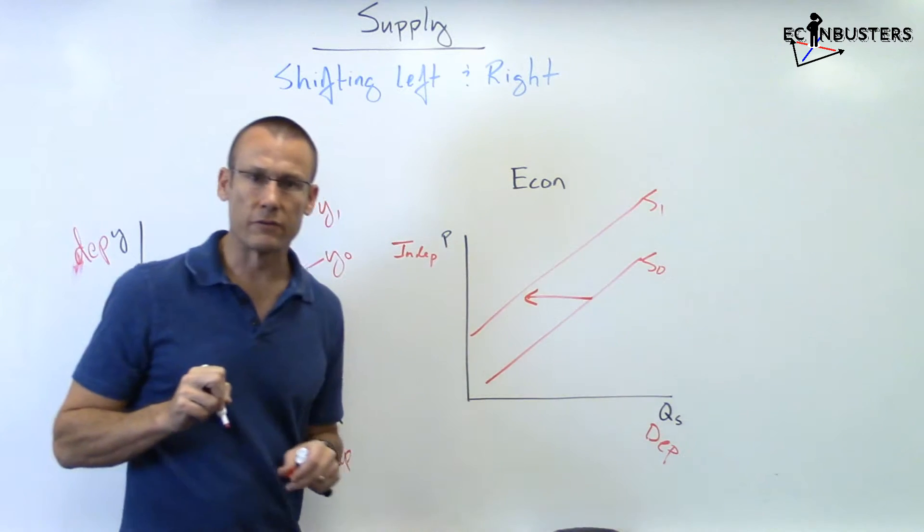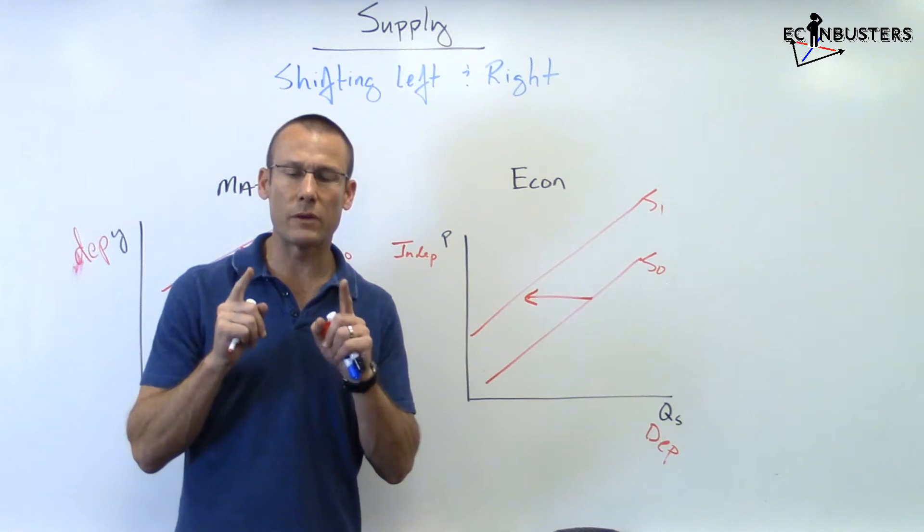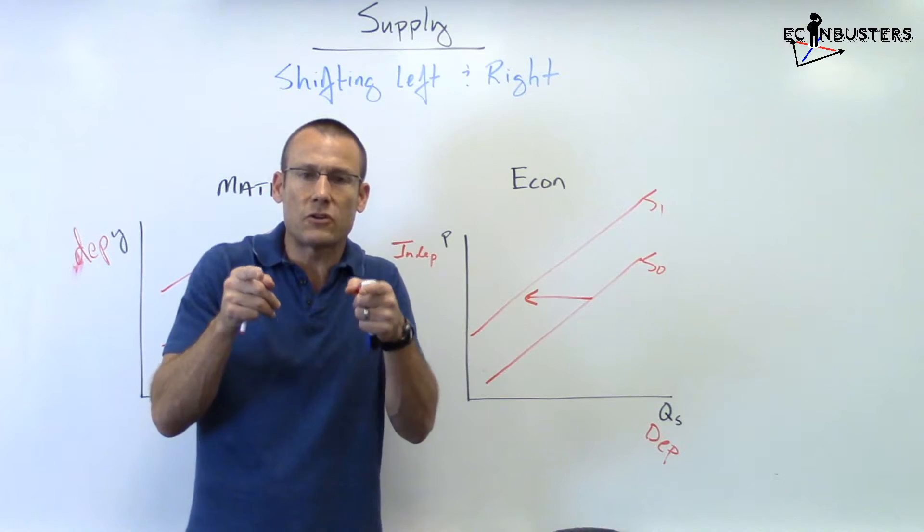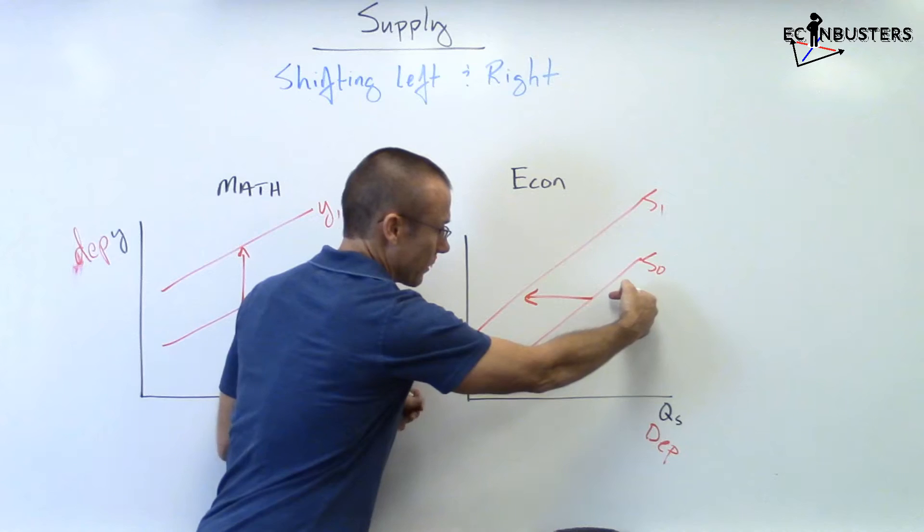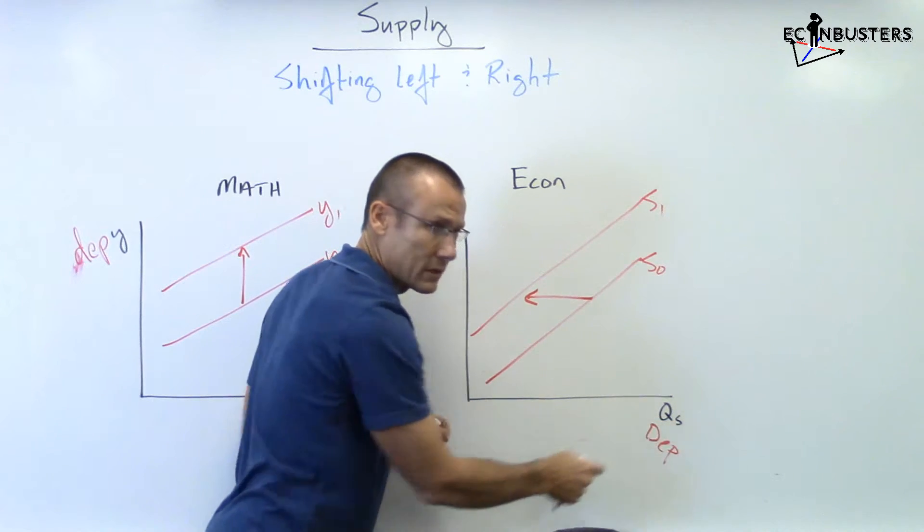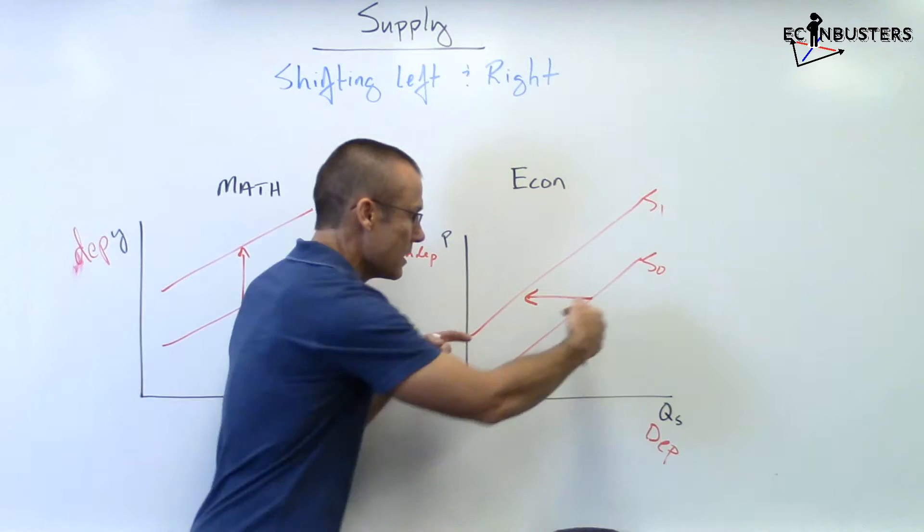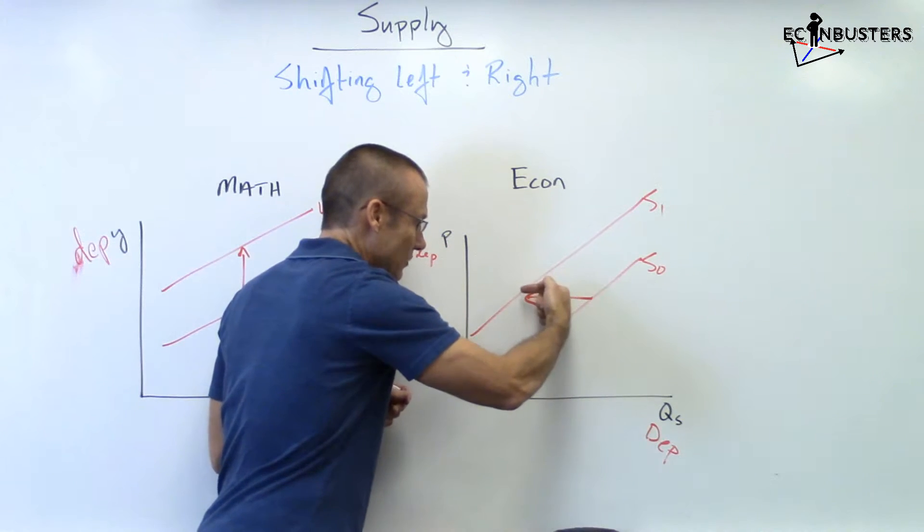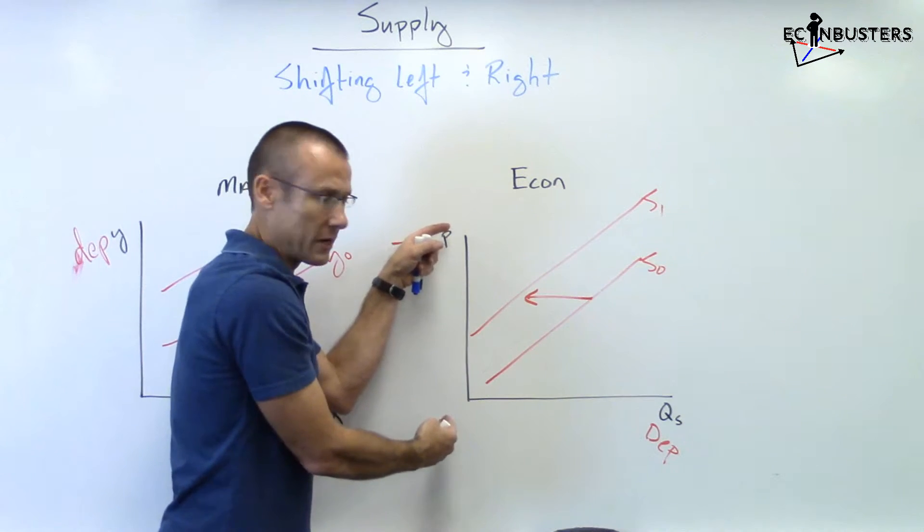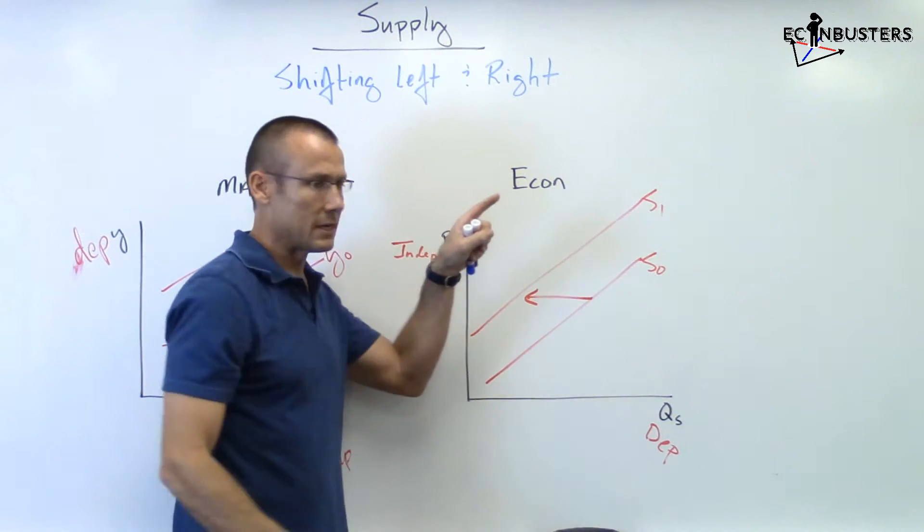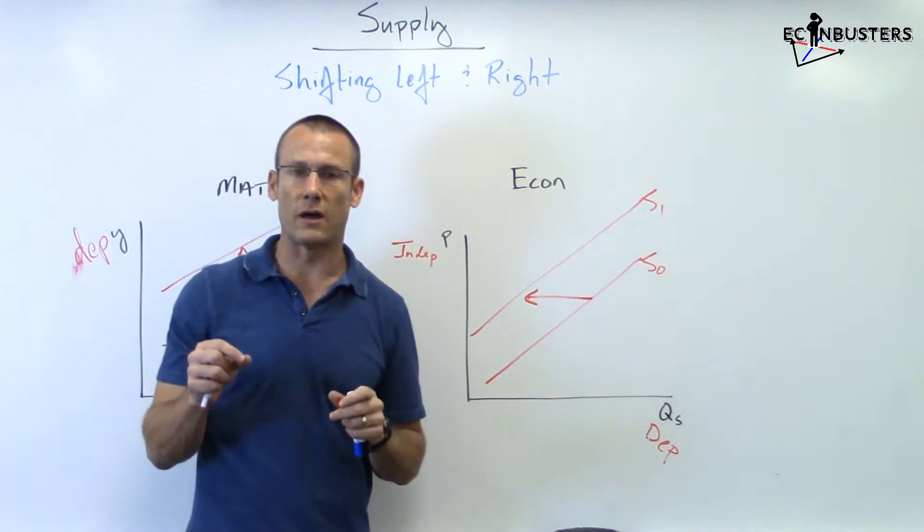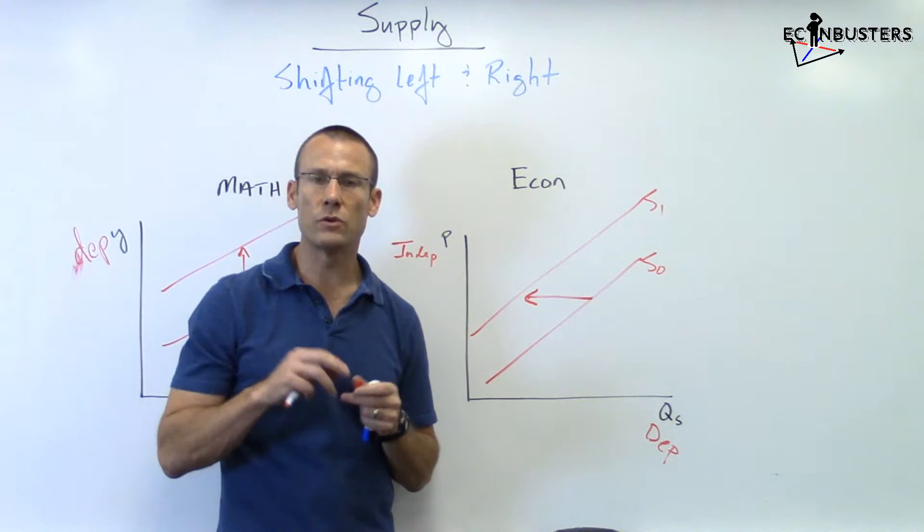Supply decreased. Why did it decrease? Why are we saying that? Well what's the definition of a decrease in supply? A decrease in supply is a situation where the quantity supplied, measured on the horizontal axis - the dependent variable on the horizontal axis - the quantity supplied is decreasing at every single price point. So we've got a decrease in the quantity supplied at every single price point. Decrease in supply - it's shifting left.